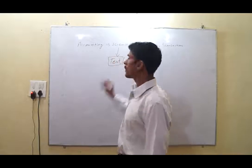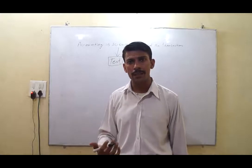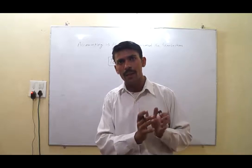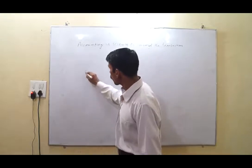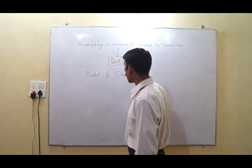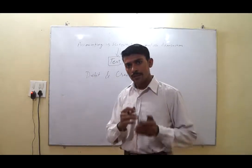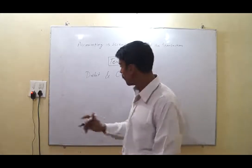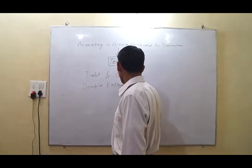Accounting is the science to record transactions. It is a science because we can test what we have to record — we can explain logically what is the reason why we debit any account and why we credit any other account. So there are two sides: one is debit and the other is credit. Accounting works on the basis of the double entry system.